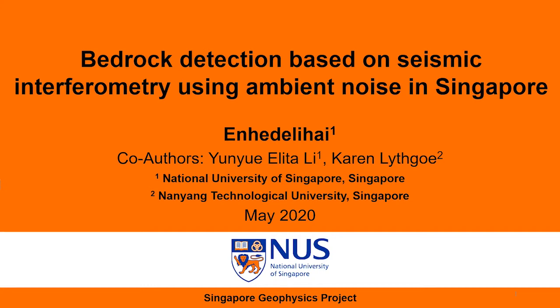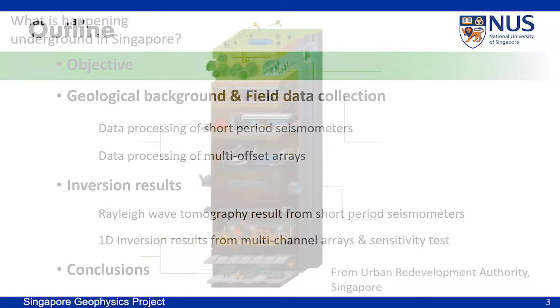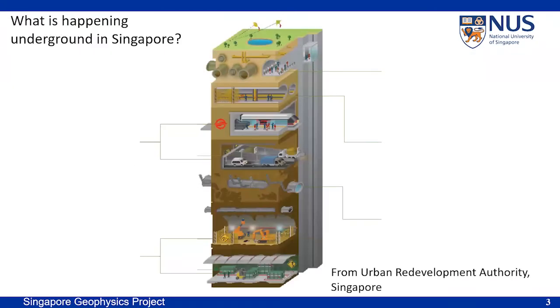The co-authors include Dr. Elita from National University of Singapore and Dr. Karen from Nanyang Technological University. In the first part, I will introduce the objective of our work. Singapore is a very small city but has a very dense population of around 5 million people. It is a very big city, and among the limited human habitat area, around 23% are reclaimed land.